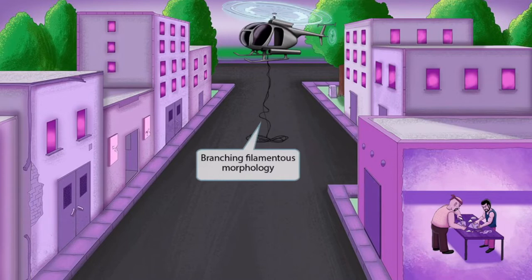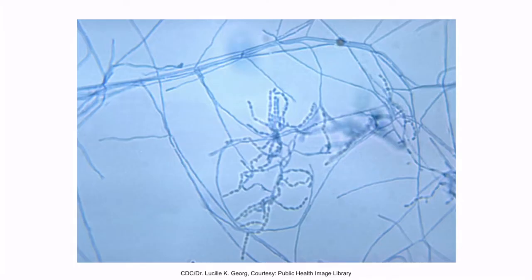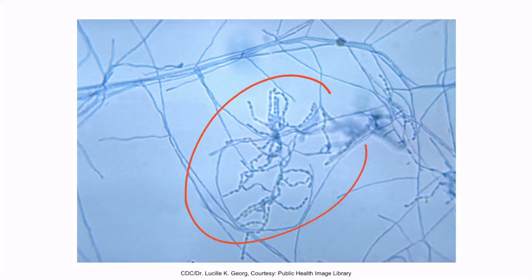An agency has fortunately gotten word about these mischievous terrorists, and now a helicopter has come to the scene to put an end to this nonsense. Notice that some tangled up cords have been dropped from the helicopter. The tangled up cords are a symbol for the branching filamentous morphology of nocardia, because the tangled up cords look similar to the organism when viewed under a microscope. This is a gram stain of a branching filamentous organism — notice that the organism forms long filamentous strands that branch into various directions.